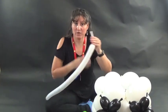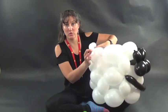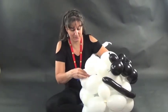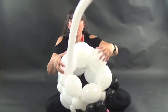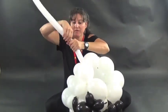Grab your white 260. And inflate it so you have about an eight finger tail. Take the nozzle. Attach it to one of the connection points. Just tie it on. And then you're just going to draw it across.